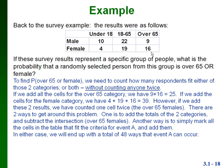There are two ways to handle this. One is to add the totals — 25 and 39 — and then subtract the intersection, which is 16. Another way is to simply mark all cells in the table that fit the criteria and add them directly: 4, 19, 16, and 9. Either way, we end up with a total of 48 respondents that were either female or over 65.